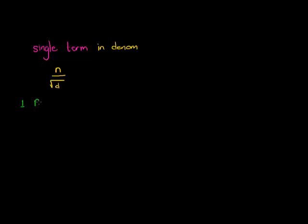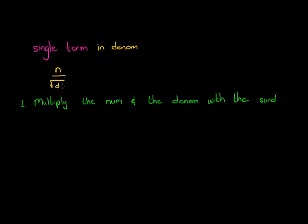The method has two steps. Step one: multiply the numerator and the denominator with the surd, d minus 1 times, where d is the degree of the surd. Step two: simplify. That's it — incredibly easy.